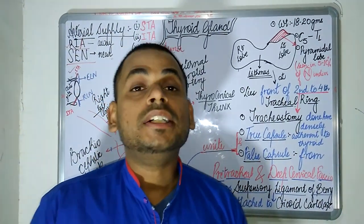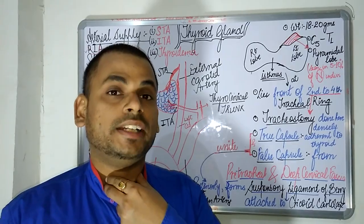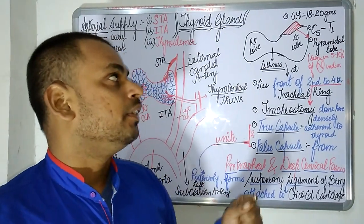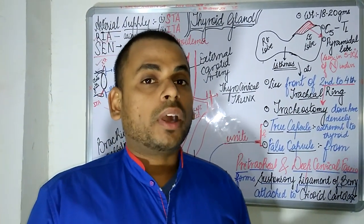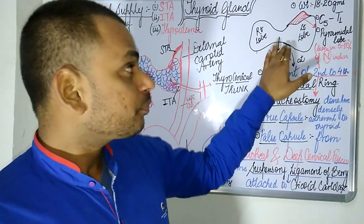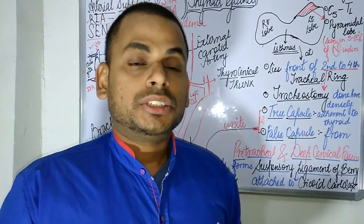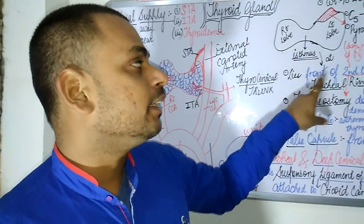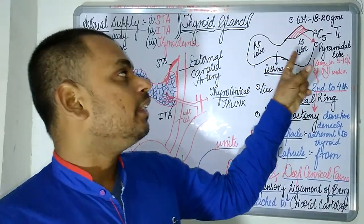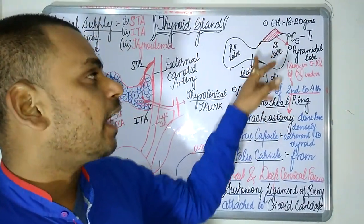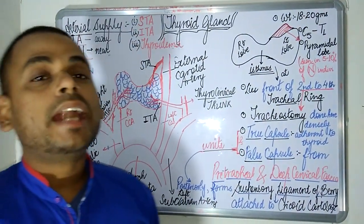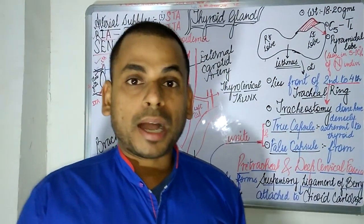The thyroid gland is located in front of the neck, just above the trachea, lying against the tracheal cartilages. The isthmus of the thyroid gland lies at the level of the second to fourth tracheal ring. The thyroid gland is butterfly-shaped with an isthmus at the second to fourth tracheal ring.